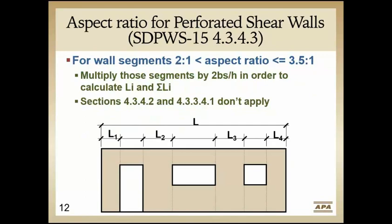Another clarification for the new SDPWS: with the perforated approach, the question would come up — some of my walls meet the 2-to-1 aspect ratio but not all of them. Do I apply the adjustment factor to the entire wall or only to those segments? Now it's clear that you apply that adjustment only to the individual wall segments. Say L4 and L1 were a 3.5-to-1 aspect ratio where L2 and L3 were not — you would apply the adjustment factor to L1 and L4 only. Note that it is the historical adjustment factor of 2 times actual width over height, not the new adjustment factor equation.